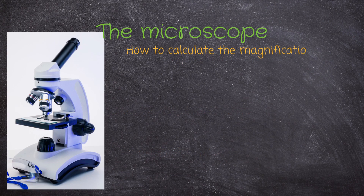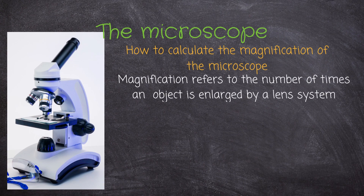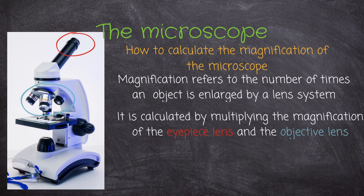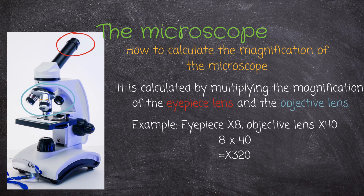Now let's look at how to calculate the magnification of the microscope. Magnification refers to the number of times an object is enlarged by a lens system. It is calculated by multiplying the magnification of the eyepiece lens by the magnification of the objective lens. For example, if the eyepiece magnifies by 8 and the objective lens magnifies by 40, you multiply 8 by 40, giving a total magnification of 320.